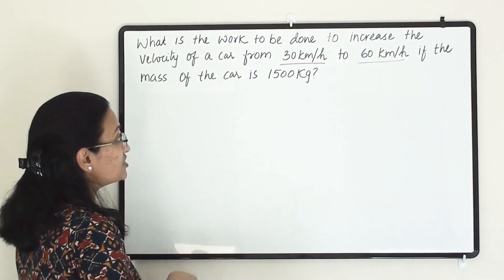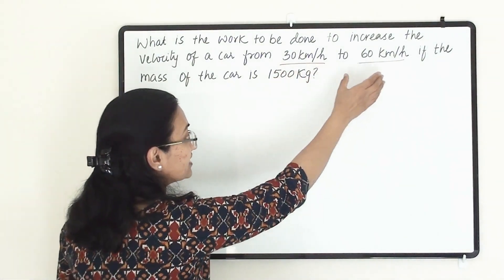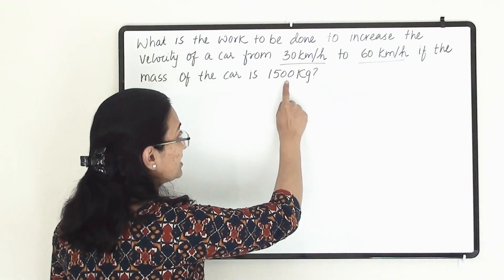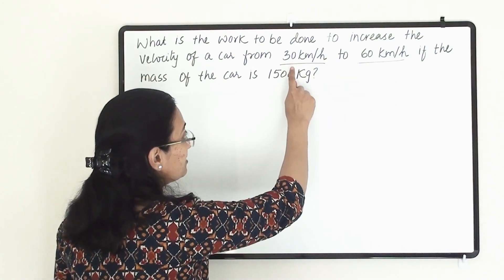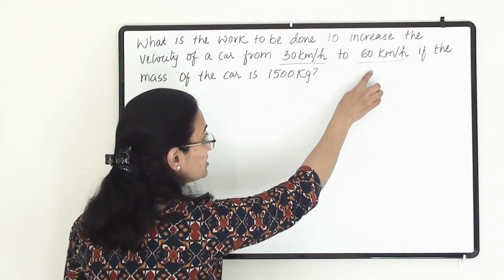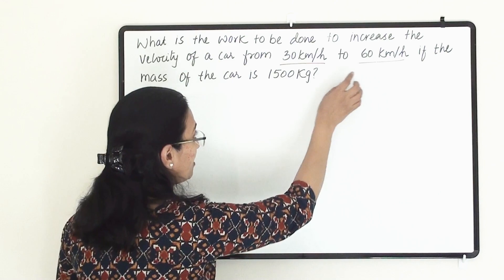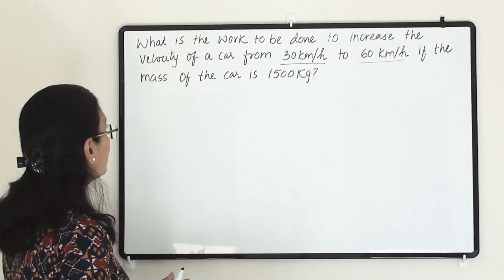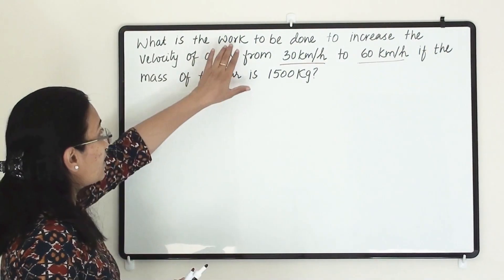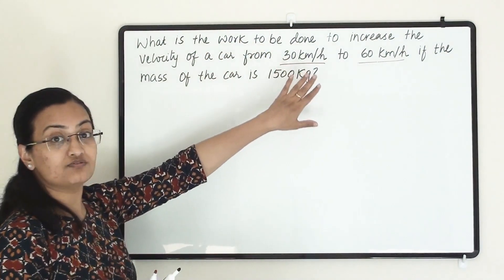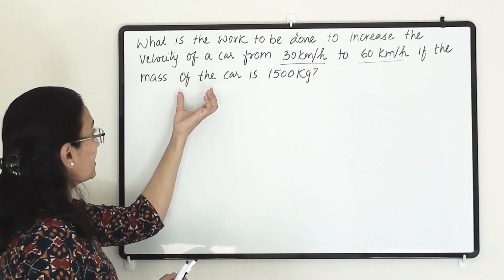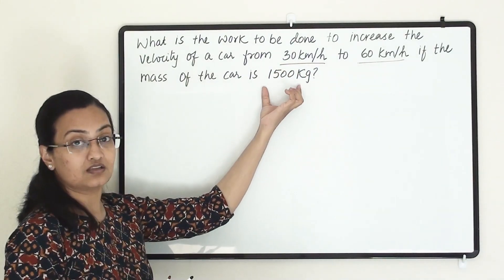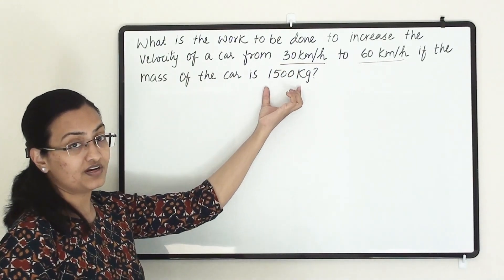So 30 km/h is the initial velocity and 60 km/h is the final velocity. To increase the velocity from 30 to 60 km per hour, how much work has been done and how much energy will we use for that, given the mass is 1500 kg?